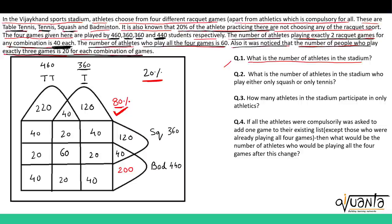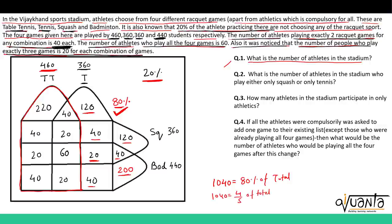Let us find out how many athletes are in this 80%. Looking at the set of table tennis, there are 460 athletes inside it. Adding further: 460 plus 120 is 580, plus 40 is 620, plus 20 is 640, plus 40 is 680, plus 120 is 800, plus 40 is 840 — totalling 1040. So 1040 athletes equals 80% of total. 80% is 4/5 of total, which means total equals 5 × 1040 / 4, giving us 1300.